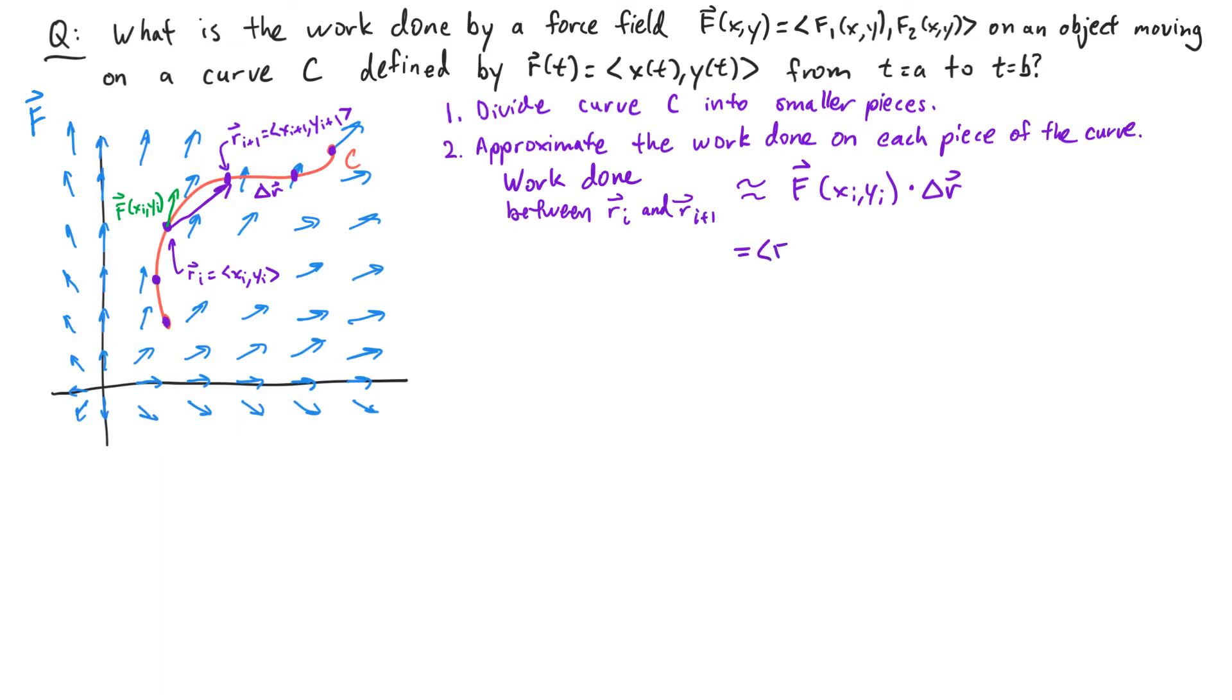Writing out the vectors, I have f1 at xi yi, f2 at xi yi dot, well, delta r dx component is going to be xi plus 1 minus xi, and the y component is yi plus 1 minus yi. xi plus 1 minus xi is my change in x, so I'm going to call this delta x. yi plus 1 minus yi is my change in y, so I'm going to call it delta y. So this dot product would look like f1 at xi yi times delta x plus f2 at xi yi times delta y.